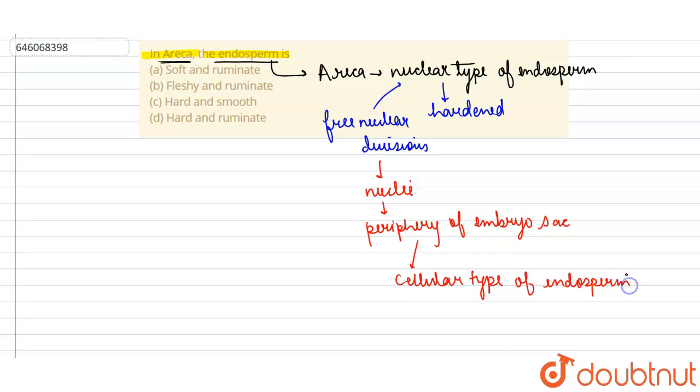does not provide nutrition. It is ruminate and it's hard in nature and has an irregular structure. So it is hard and ruminate, so option D is correct. It's not hard and smooth, okay. It's not fleshy and ruminate